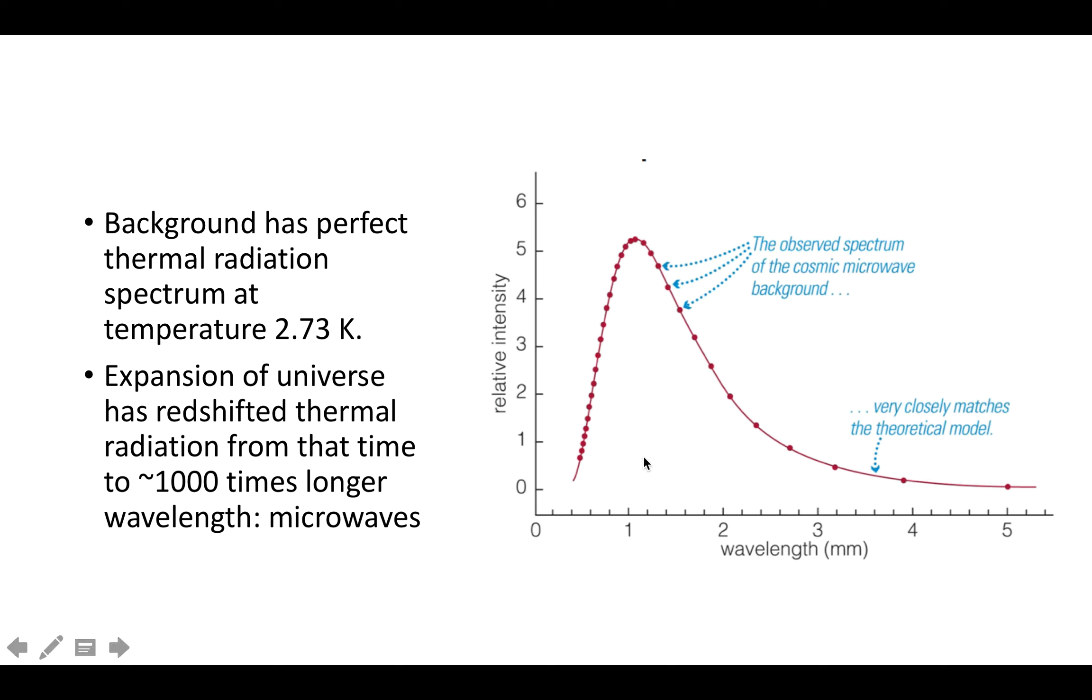Now this graph is showing the spectrum of the cosmic microwave background recorded by NASA's COBE satellite. COBE stands for Cosmic Background Explorer. And it was launched in the early 1990s to test ideas about the cosmic microwave background. So it has theoretically calculated thermal radiation spectrum, which is a nice smooth curve for the temperature of 2.73 Kelvin for basically the start of the Big Bang.